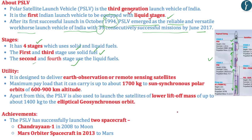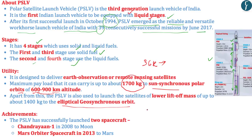The payload PSLV can carry is about 1700 kg to sun-synchronous polar orbits of 600 to 900 km altitude — very low Earth orbits under 1000 km from Earth's surface. This is less powerful than GSLV, which can carry objects to 36,000 km altitude. However, PSLV can also carry smaller payloads to elliptical geosynchronous orbits — not to be confused with the circular geosynchronous orbit — with a minor axis of less than 1000 km.